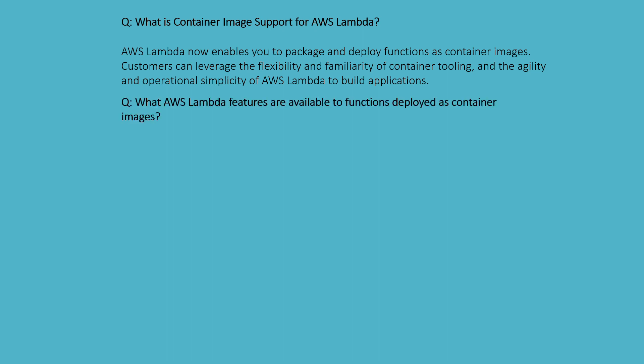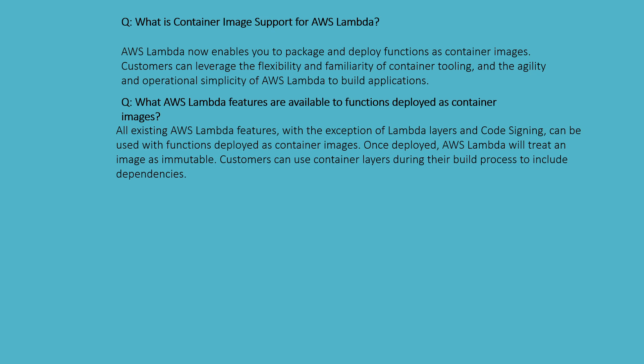What AWS Lambda features are available to functions deployed as a container image? All existing AWS Lambda features, with the exception of Lambda layers and code signing, can be used with functions deployed as a container image. Once deployed, AWS Lambda will treat the image as immutable. Customers can use container layers during their build process to include dependencies.